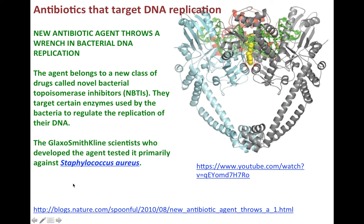Finally, there are a class of antibiotics that target topoisomerases. This new class of antibiotics is called novel bacterial topoisomerase inhibitors and they inhibit enzymes such as DNA gyrase. If you don't have a functional DNA gyrase, you will not be able to replicate your DNA and you will die if you're a bacterium. So this whole class of antibiotics targets those gyrases. If you want to learn more about this and other different antibiotics that target DNA replication, you can follow the link at the bottom.